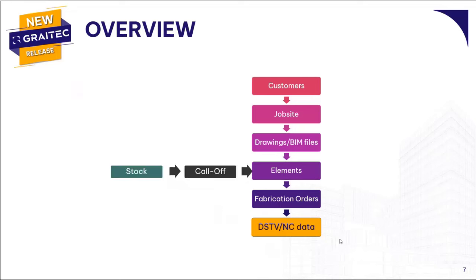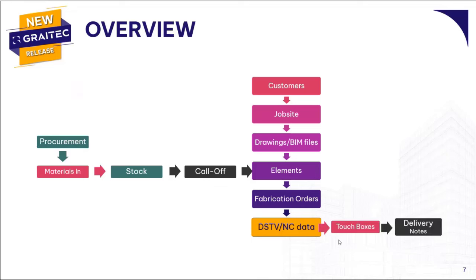To manage the elements, you need to verify if you have the raw material in stock to produce the assemblies. If not, we have a nesting module where you can verify how many bars or plates are required for the entirety of the fabrication order and then procure the material. In the 2025 release, you can manage this across multiple fabrication orders simultaneously — nesting each individual fabrication order and then grouping them all together for one single purchase. We can also drive NC data to the shop, link to touch boxes, and create delivery notes.